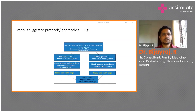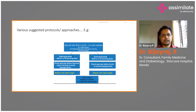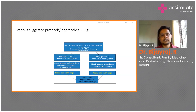Various protocols are suggested on how to start insulin and how to intensify it. Theory-wise, you are supposed to calculate the per kg dose of insulin — 0.1 units per kg or 0.5 units per kg depending on the situation. Then you calculate the total daily dose, giving two-thirds of the dose in the morning and one-third in the evening. Those are the kinds of things the guidelines suggest. But in practice, it might not work that way.